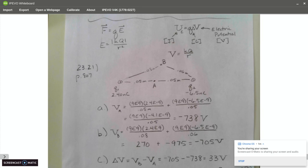So if we look at page 807, problem 23.21, we have two charges there. And it wants to know for part a, what is the electric potential at the point a midway between the charges?